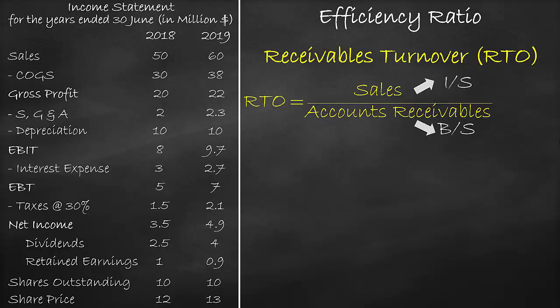The Income Statement is a Flow Account, which means it is calculated over a year, while the Balance Sheet is a Stock Account, which is calculated on a certain day. Since we cannot compare a year to a day, we need to convert a day into a year by getting the average of the two Balance Sheet items. So we will use one Income Statement and two Balance Sheets.